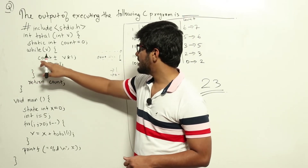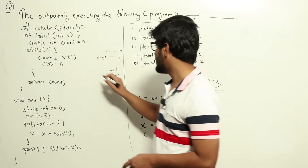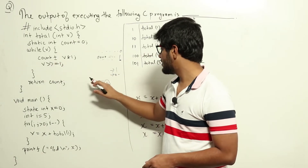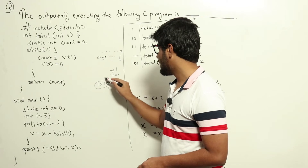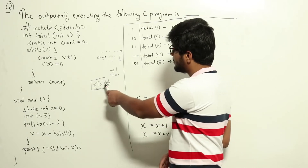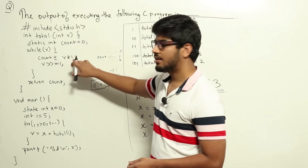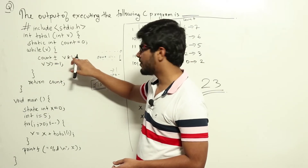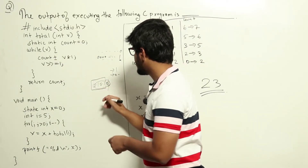Then the next statement does v >>= 1, shifting v right by 1. For example, if v is 1010, shifting right once causes the rightmost bit to go out and a 0 is added on the left side. So the loop checks the least significant bit with & 1, then shifts right, then checks the new least significant bit with & 1 again, and repeats.